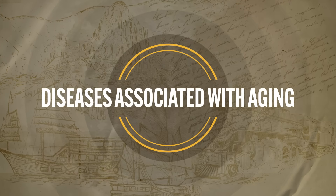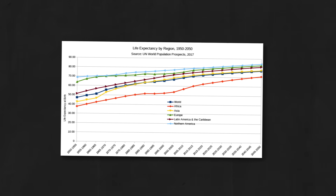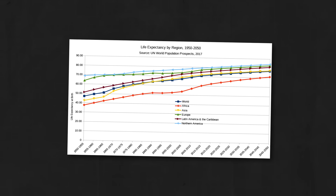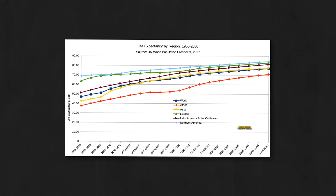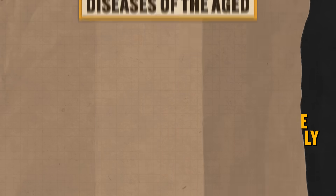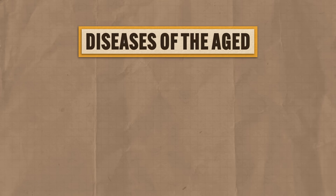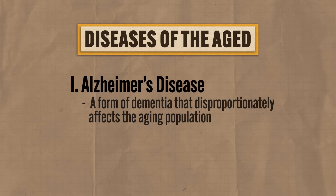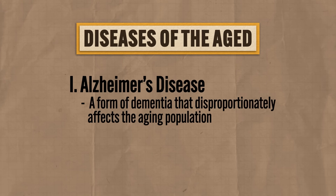The last category of disease we need to briefly consider is the growing prevalence of diseases associated with old age. Now that medical technology has afforded many people in more developed countries an extra decade or two to live, there are some diseases simply associated with living longer lives. First is Alzheimer's disease, a form of dementia that disproportionately affects the aging population — those affected suffer memory loss, and as the disease progresses it undermines basic bodily functions and can eventually lead to death.